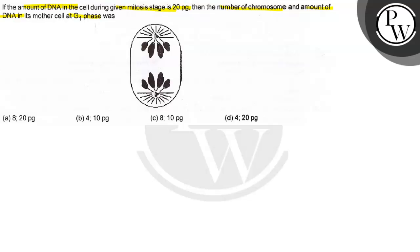They have given this diagram showing the mitosis stage. The options are: A is 8 chromosomes and 20 picograms DNA, B is 4 chromosomes and 10 picograms DNA, C is 8 chromosomes and 10 picograms DNA, and D is 4 chromosomes and 20 picograms DNA.